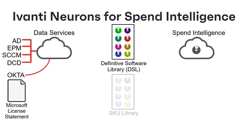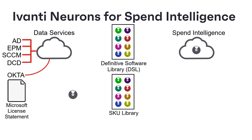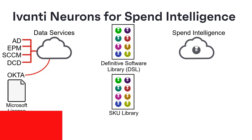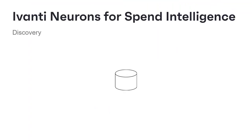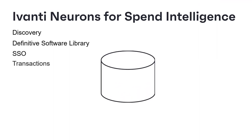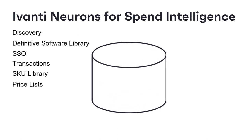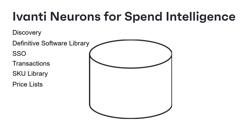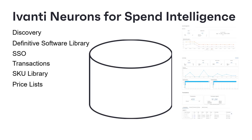Finally, when you import details of your contracts or license transactions — for example, your Microsoft license statement — Ivanti Neurons for Spend Intelligence matches the SKUs in these items to SKUs in the Ivanti SKU Library, so that it knows exactly what software you have bought and has access to all of the additional information in the SKU Library. Ivanti Neurons for Spend Intelligence now has a huge amount of information, supplemented with data it already knows about the software titles you are using and the licenses you have bought, and displays this treasure trove of information in a set of dashboards within the Ivanti Neurons for Spend Intelligence components.